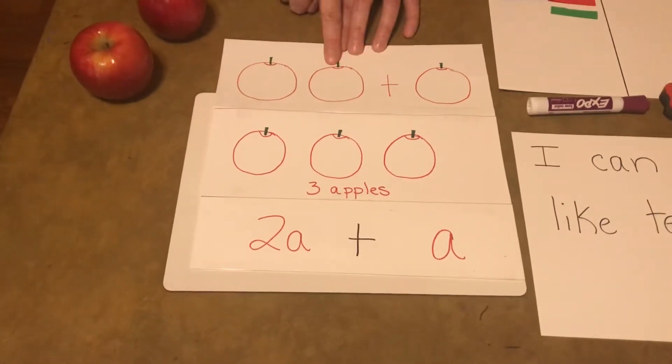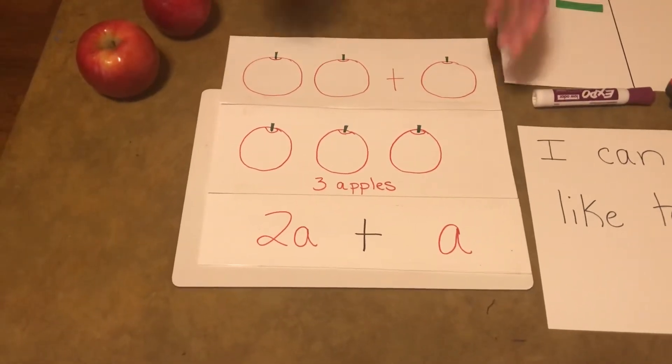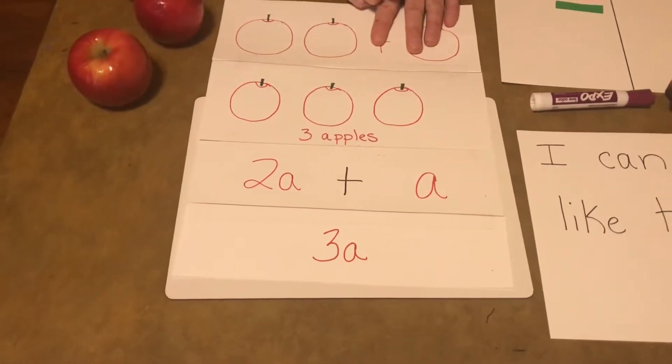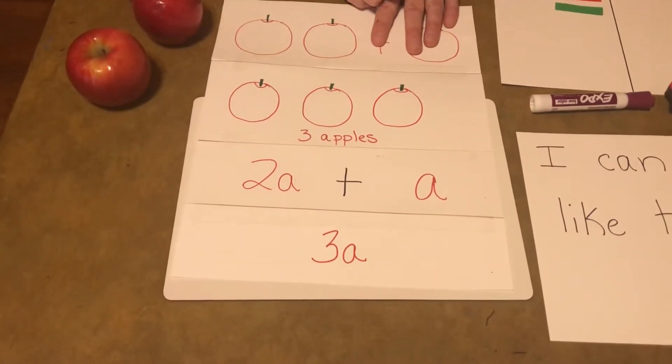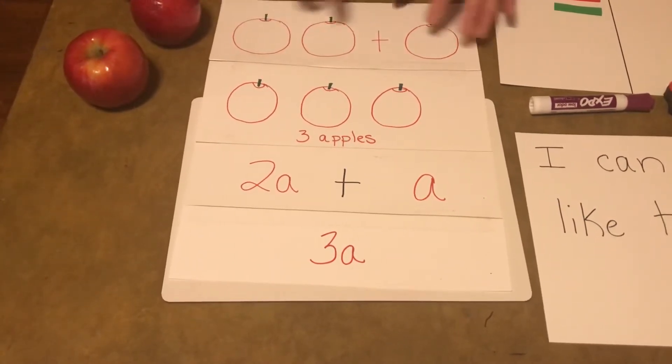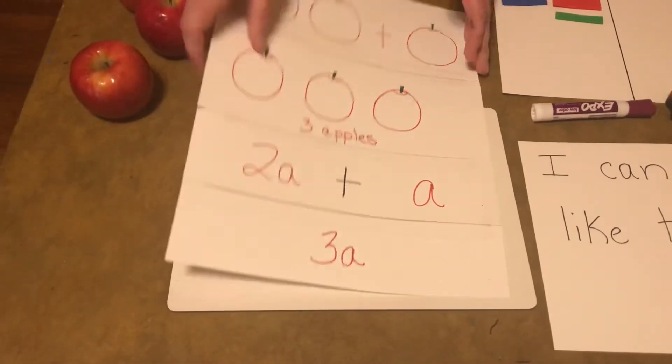So we'd have 2A plus A, and we know there's 3A. A doesn't always represent apples, but that helps us think through it. It can represent anything.